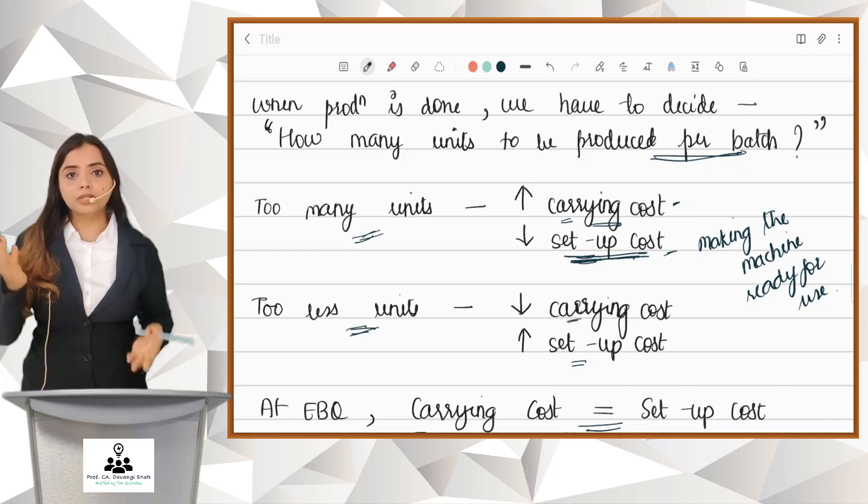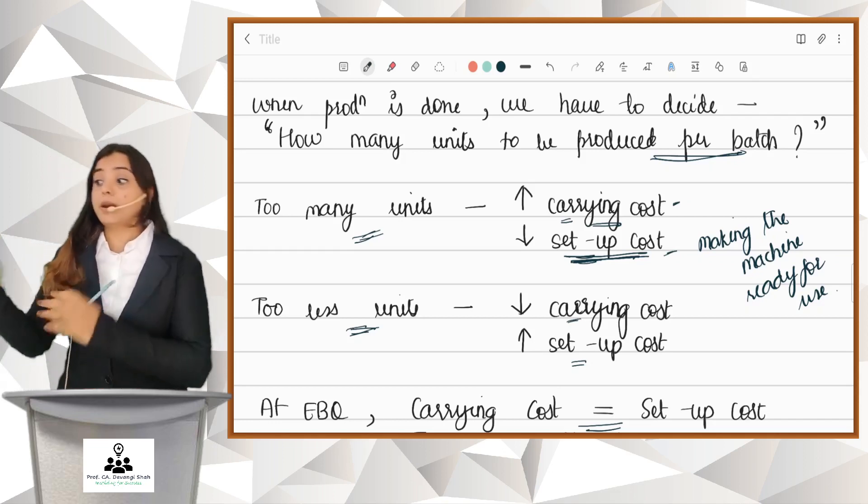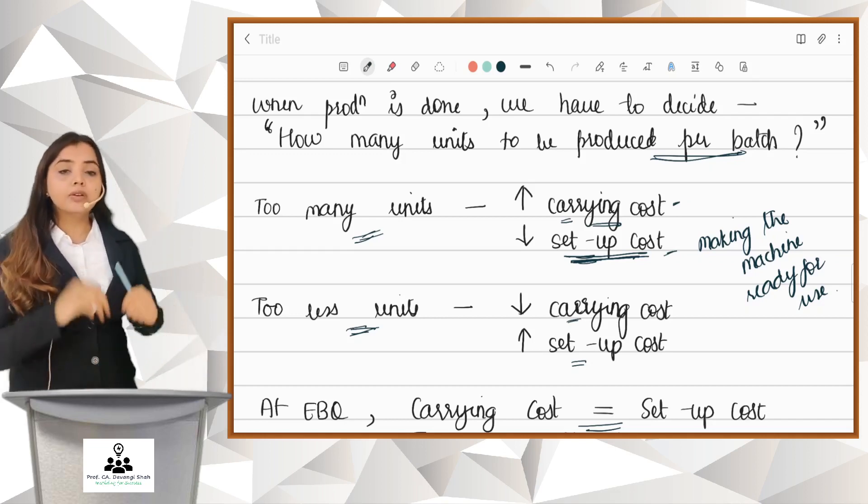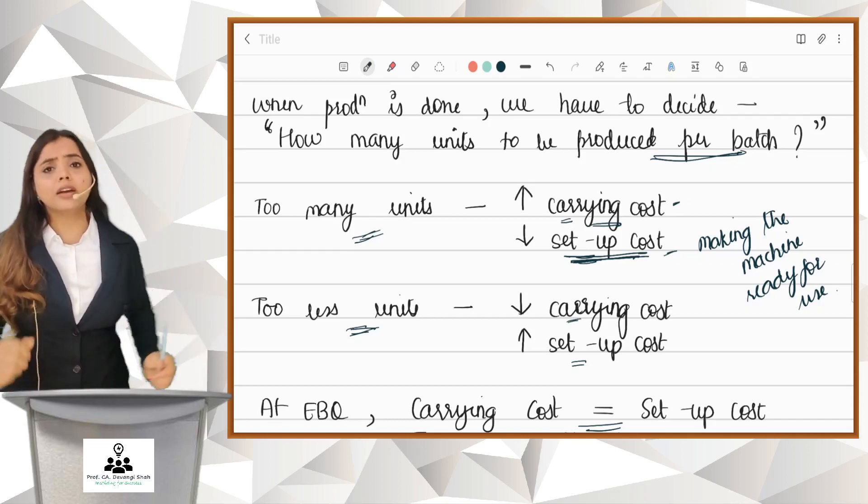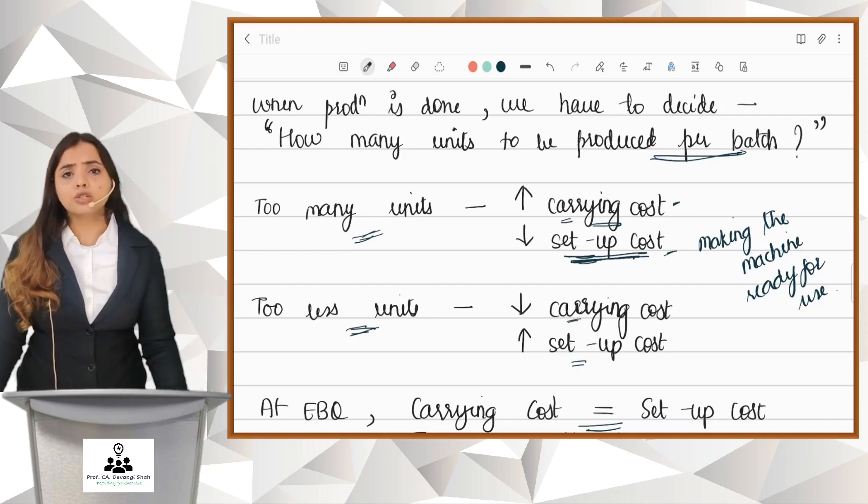So these two costs are opposite in nature. You try to save on setup cost, you are spending on carrying cost. You try to save on carrying cost, you are spending on setup cost. So exactly what is to be done? Should I produce too much? Should I produce too less? Exactly what is to be done?